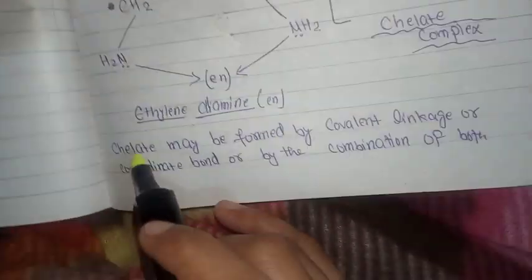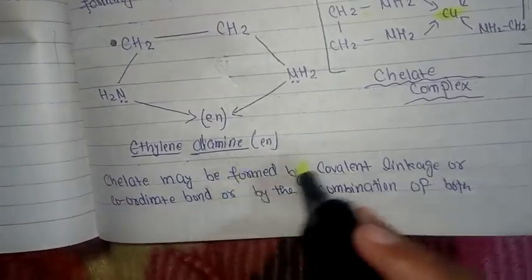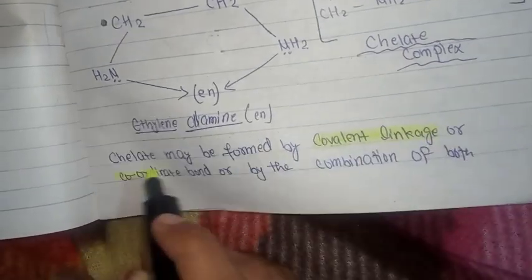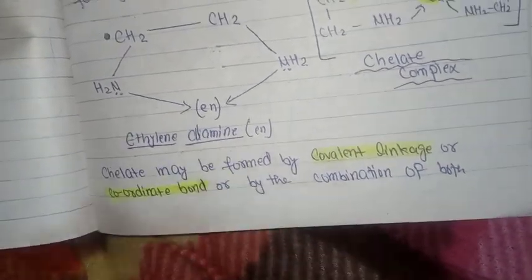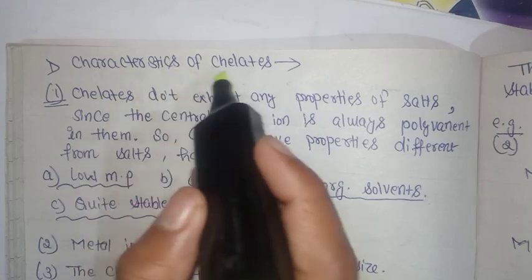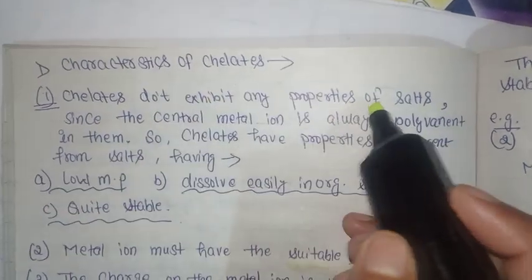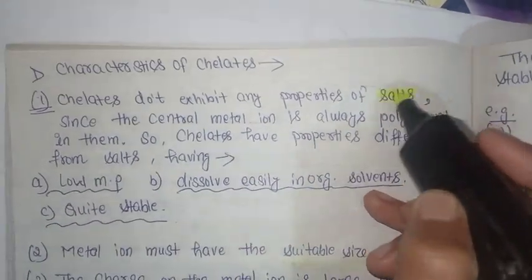The bonding involves coordinate bonds or covalent linkage by combination of both. Chelates do not exhibit any properties of salts.